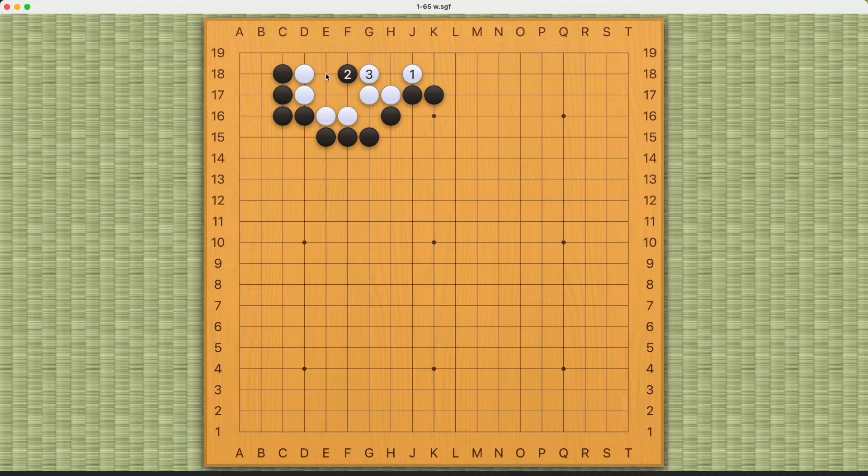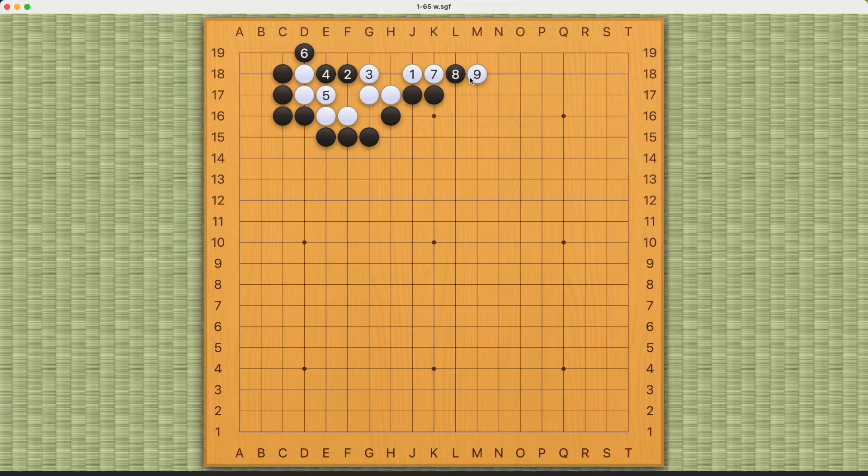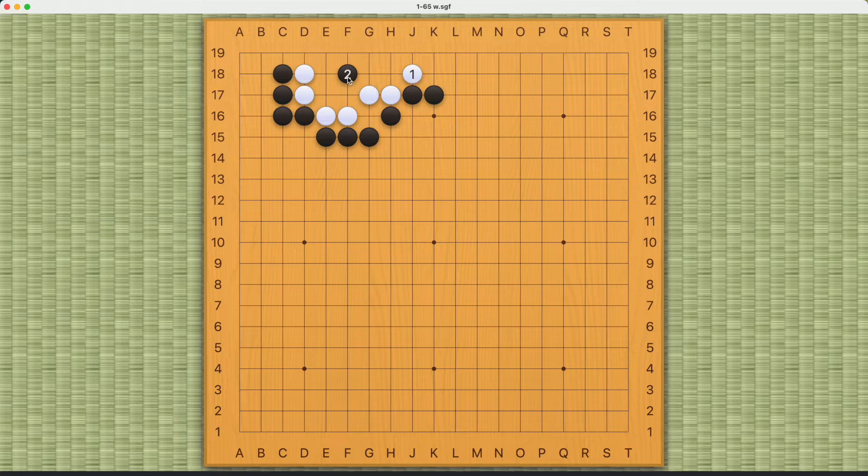Then what happens now is that black can clamp here at number four and connect back, and this will not be enough eye space. Of course you can argue white has these moves that potentially will work, but I think for the purpose of our problem this is probably outside the scope.